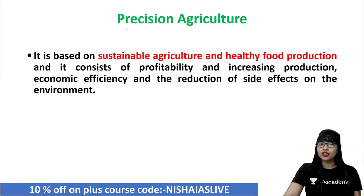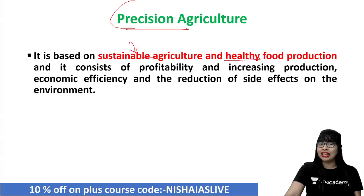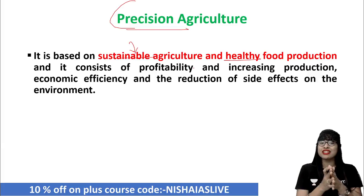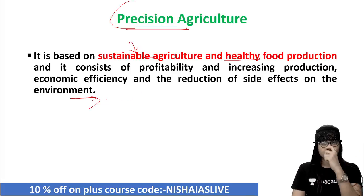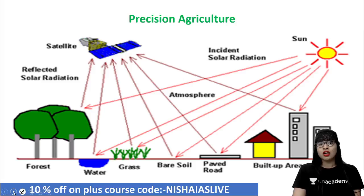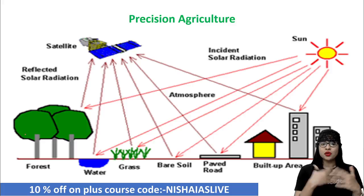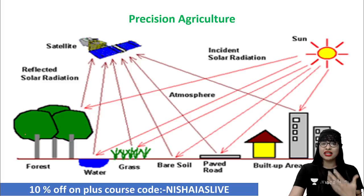Since PA is based on sustainable or long-term agriculture and also contributes to healthy food production, which is very important for maintaining the health and nutritional perspective of all people, it consists of profitability and increasing production, economic efficiency, and also reducing the side effects on the environment. That is something which can be achieved through precision agriculture. From this particular picture, you can see how it has been done — solar energy is utilized, and from the grass to the water to the bare soil, how it has been laid out in the built-up area.